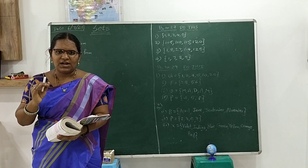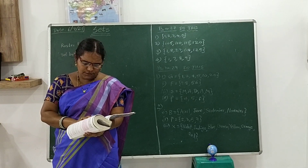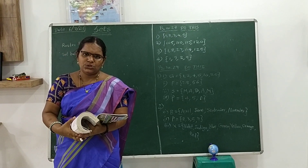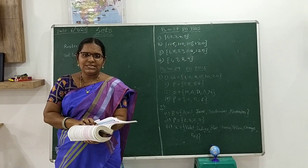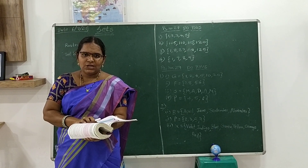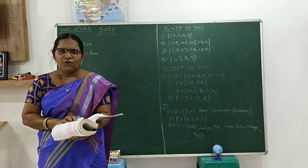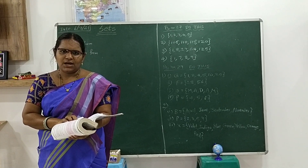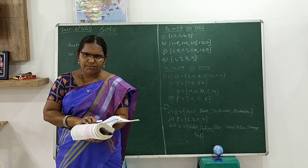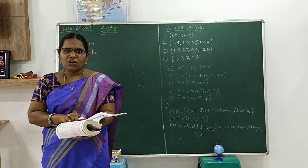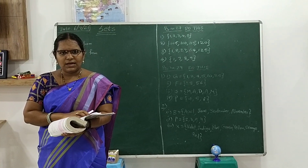Next, the third one: 1, 4, 9, 16 and so on. 1 means 1 squared, 4 means 2 squared, 9 means 3 squared, 16 means 4 squared and so on. All are squares of natural numbers. The common property here is squares of natural numbers.